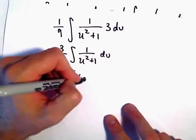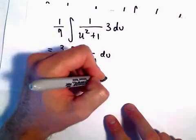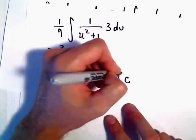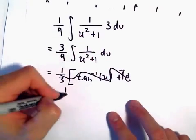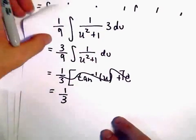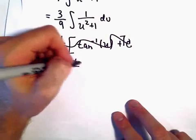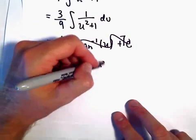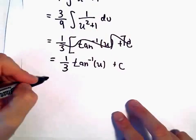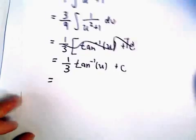The antiderivative of this function will now be arctangent of u plus c. We'll just stick the plus c on the outside there.